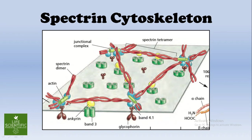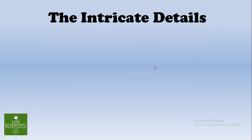In this figure, you can see all the spectrin molecules — four spectrin molecules meet at the junctional complex. There are four junctional complexes visible in the figure. Now let us focus on the junctional complex.